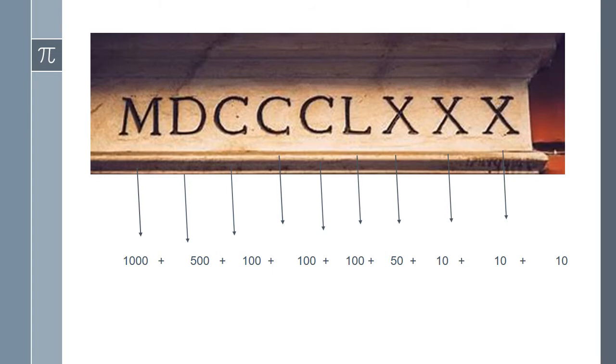Now, let's read this. M is equal to 1000, so 1000 plus D (500) plus C (100) plus C (100) plus L (50) plus X (10) plus X (10) equals 1880. So it means that the building was built in 1880.